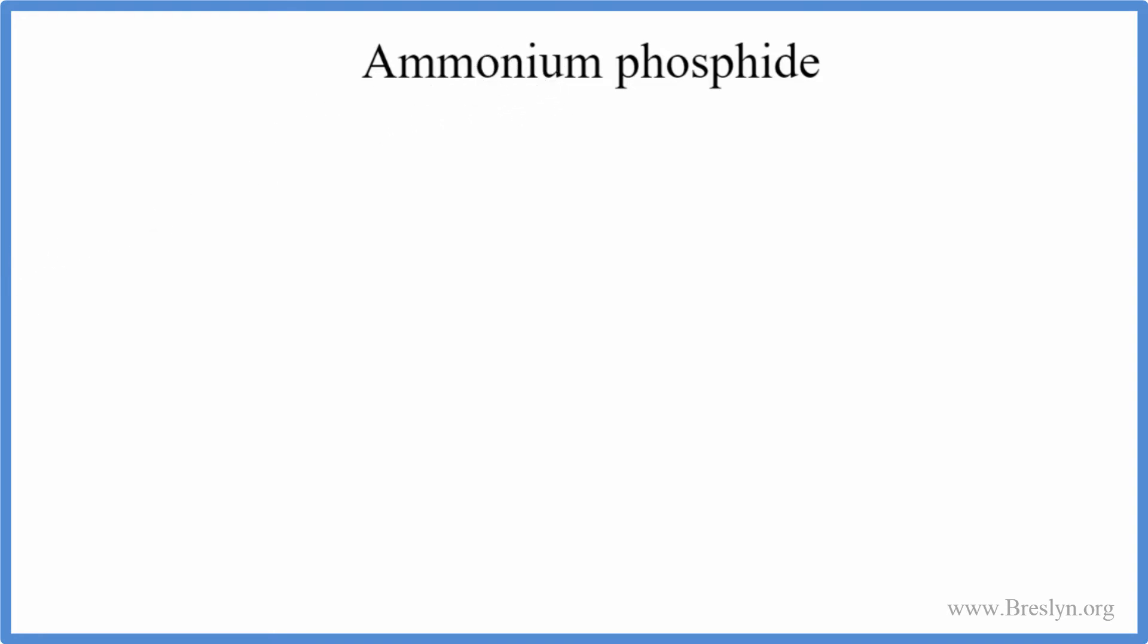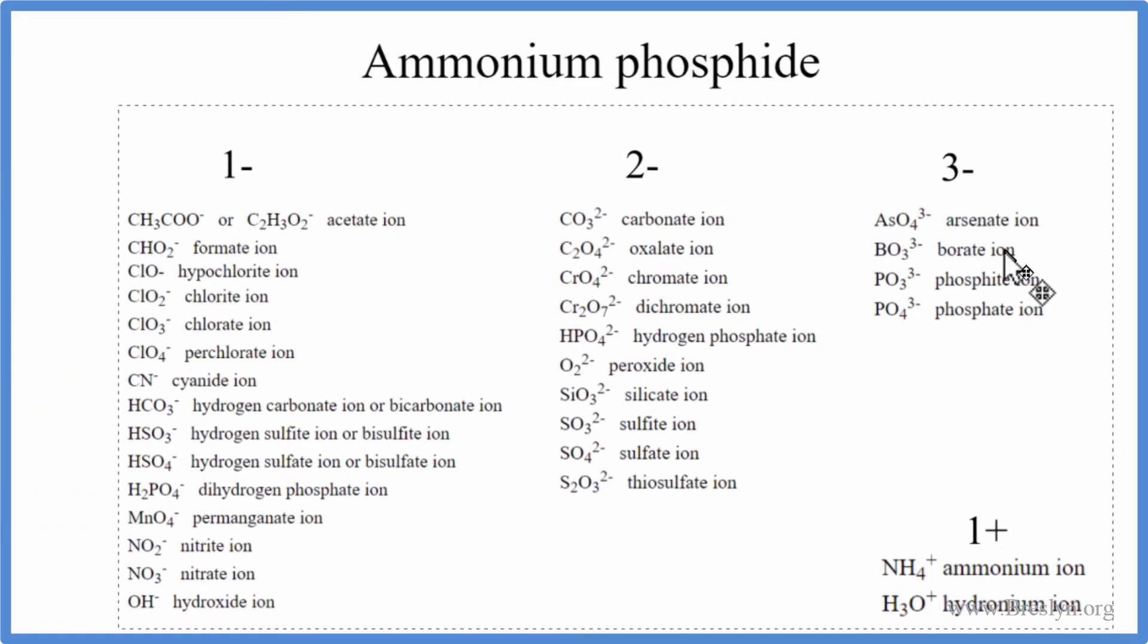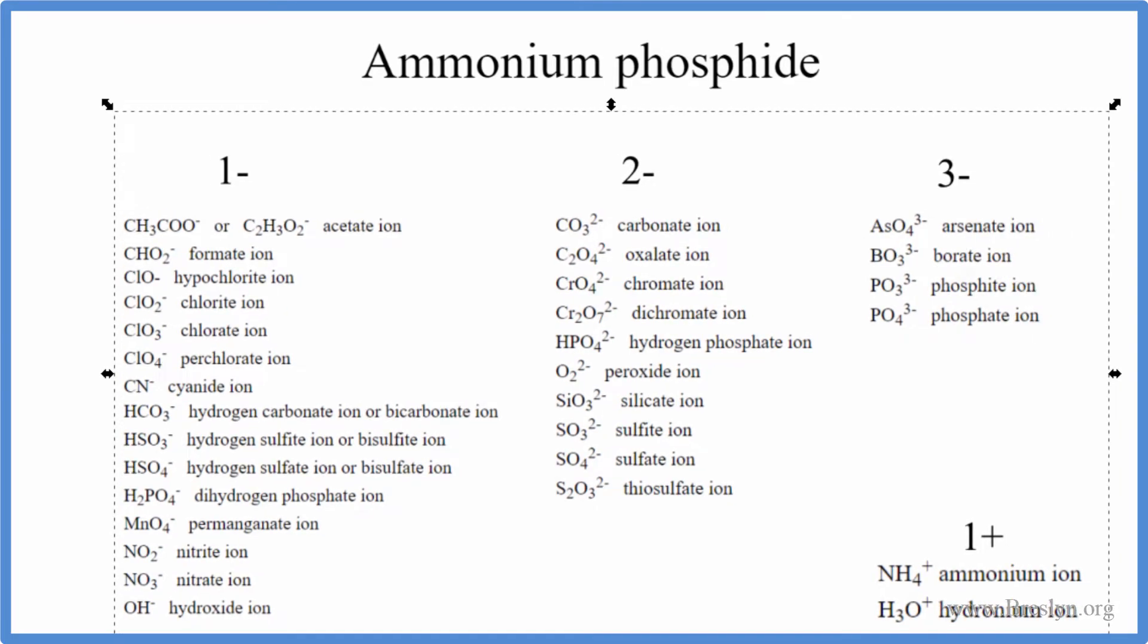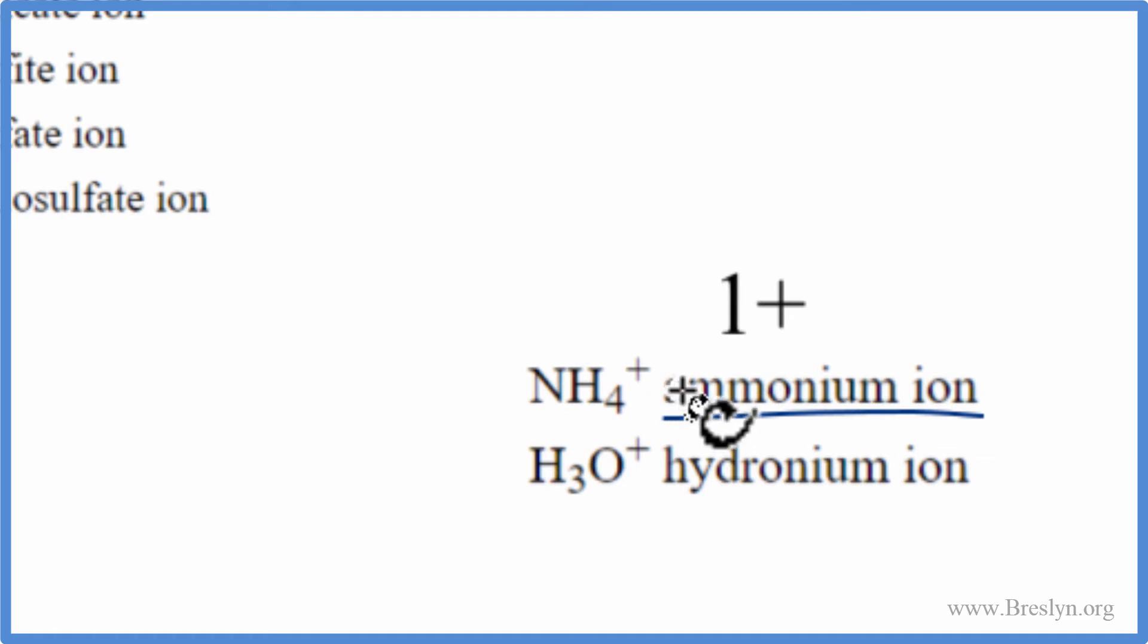So we can look that up on a list of polyatomic ions. Here's our list. Some teachers let you use this on the test. Others ask you to memorize it. Let's find ammonium. We're looking here, and ammonium right here, the ammonium ion, NH4+.